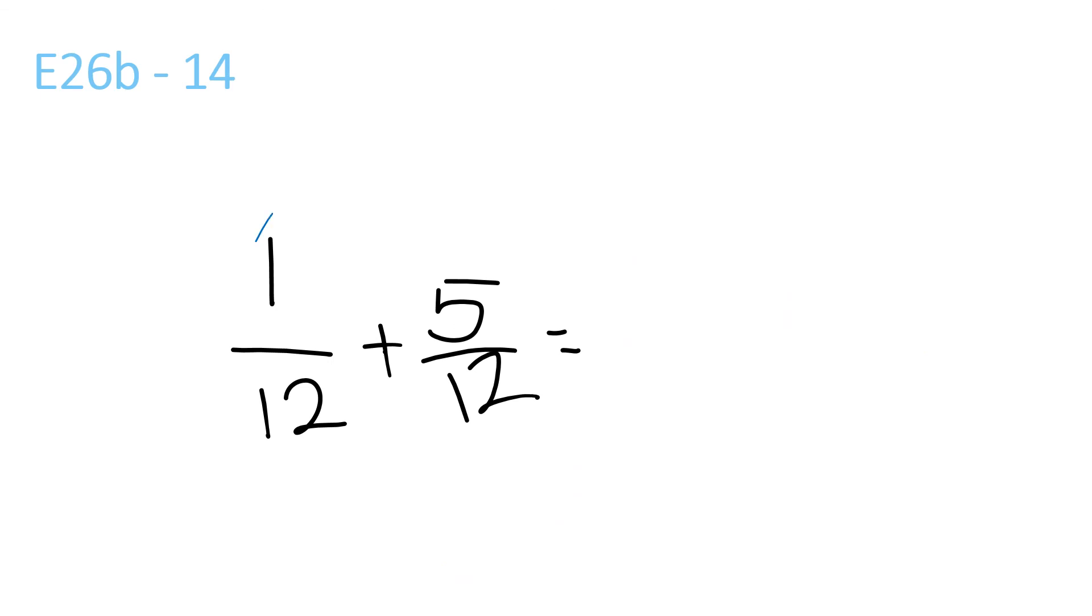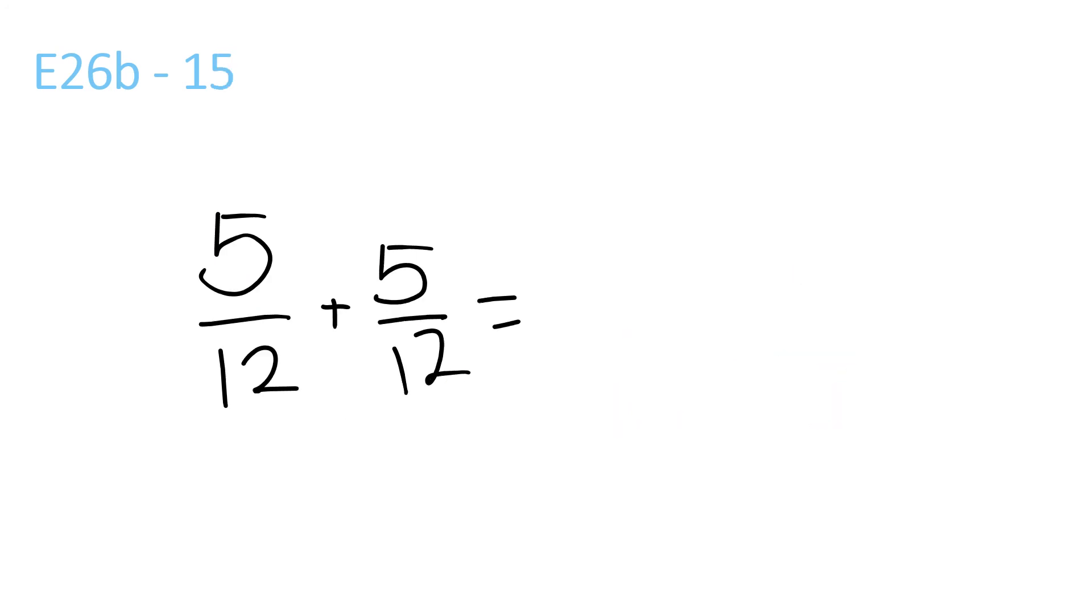This is really easy. 1 plus 5 is 6 over 12, because it stays the same, and that simplifies to 1 over 2. So, next question, 5 plus 5 is 10, over 12, because that stays the same. 10 over 12 can be simplified to 5 over 6, and that's our last question.